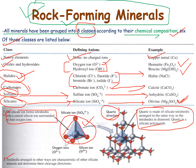The third example shows tetrahedra arranged in another way, which is characteristic of other silicate minerals and determines their cleavage directions. Basically, the arrangement of different chemical species in a crystalline structure gives rise to different kinds of mineralogy with different kinds of chemical classes. These are the types of chemical classes we are dealing with in minerals.